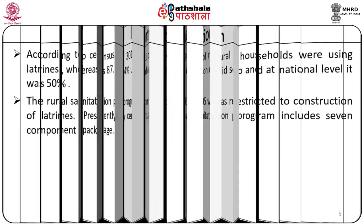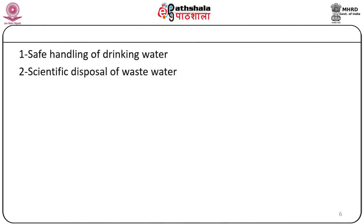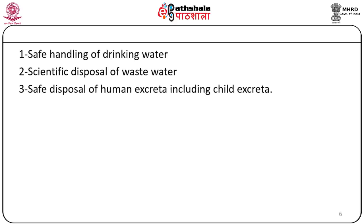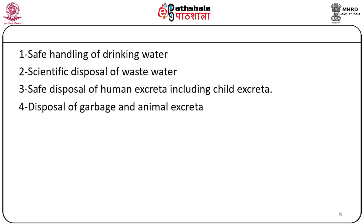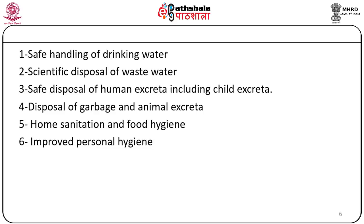The components of the rural sanitation package are: 1. Safe handling of drinking water; 2. Scientific disposal of wastewater; 3. Safe disposal of human excreta including child excreta. It was realized that there are more harms caused by child excreta, though community members have a belief that child excreta is free from germs. 4. Disposal of garbage and animal excreta; 5. Home sanitation and food hygiene; 6. Improved personal hygiene; and 7. Village sanitation.